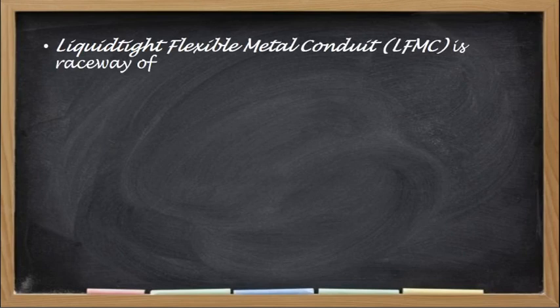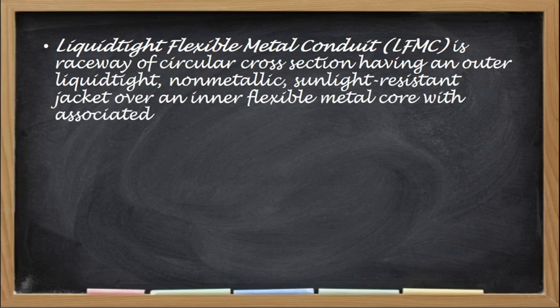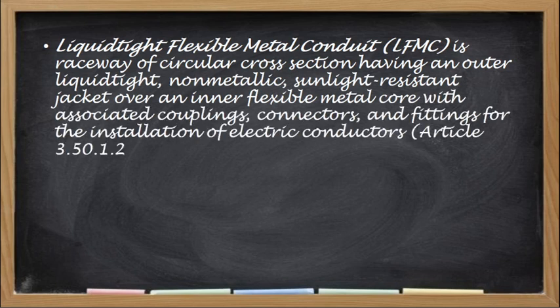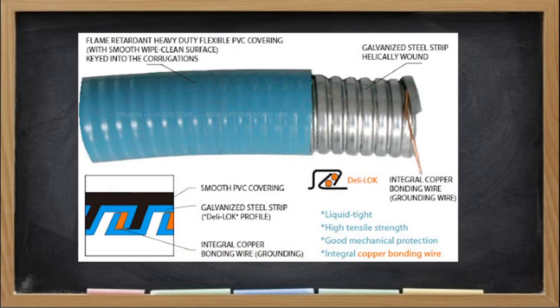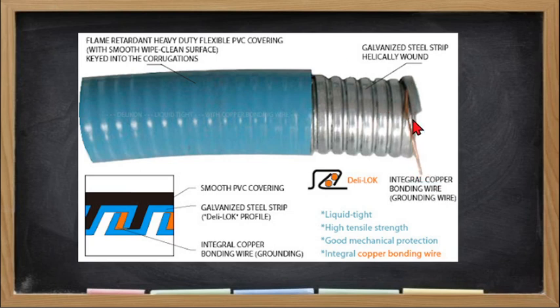The Liquid-tight Flexible Metal Conduit or LFMC is a raceway of circular construction having an outer liquid-tight, non-metallic, sunlight-resistant jacket over an inner flexible metal core, with associated couplings, connectors, and fittings for the installation of electric conductors. In the photo, the outer covering is liquid-tight and sunlight-resistant, and the inside is essentially a flexible metal conduit. The wire shown is for grounding the system when this conduit is attached to a device.